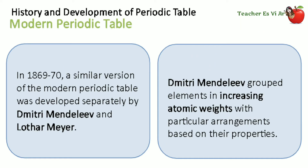From 1869 to 1870, a similar version of the modern periodic table was developed separately by Dmitri Mendeleev and Lothar Meyer. Mendeleev published his work on the relationship of the properties of the elements to their atomic weights in 1869, grouping elements in increasing atomic weights with particular arrangements based on their properties.